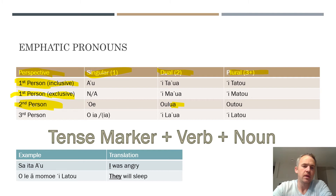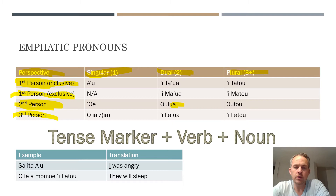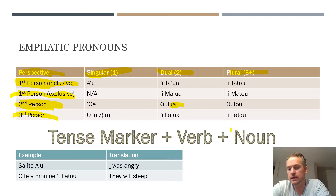For third person: singular is ia — sometimes the glottal drops and it's just ia. For dual, it's ilā. And plural is ilātou. Just like the first person pronouns, it's the same words but we switch out the T for an L to make it the third person case. So ilātou in English would be like 'they.'